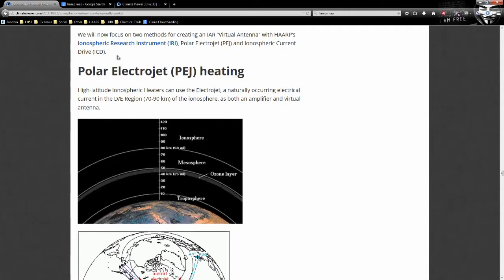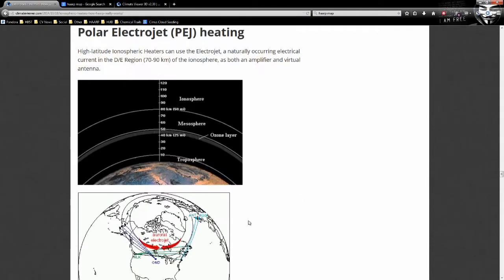Polar electrojet heating. This is the way all of these at the North Pole work. They heat the, I'll just read it, high latitude ionospheric heaters can use the electrojet, a naturally occurring electrical current in the DE region, this is 70 to 90 kilometers, so right about here, of the ionosphere as both an amplifier and virtual antenna.